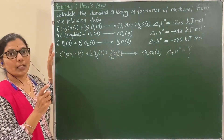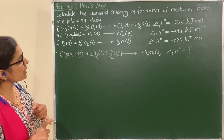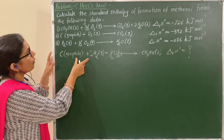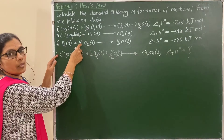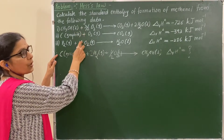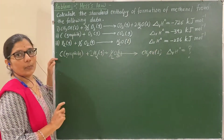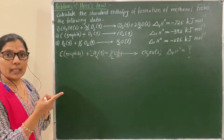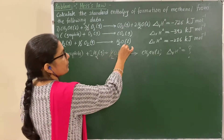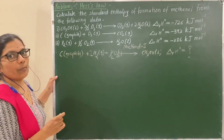We want to find out the enthalpy change for this reaction. We can solve this numerical by three methods. Let us see them one by one. In the first method, obtain this equation from the three given equations by adding, subtracting, dividing, or multiplying those equations to get the required equation and find out its enthalpy change. You studied this method in the earlier session.